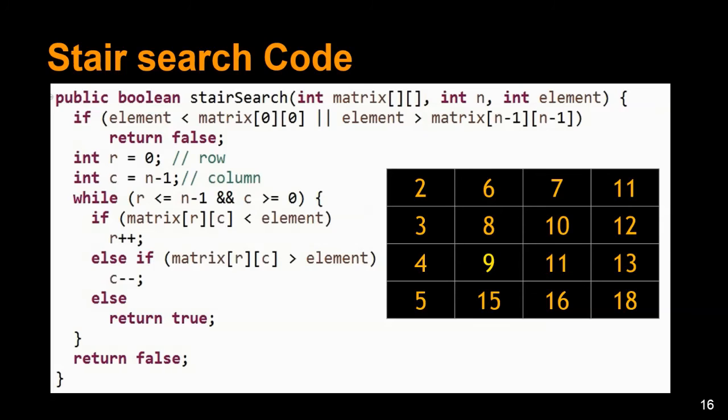Here, the first case is if the element that we are trying to find is greater than the bottom right element or less than the top left element, we definitely won't be able to find that element in this particular matrix.